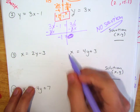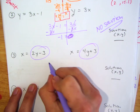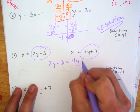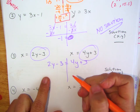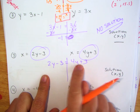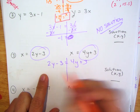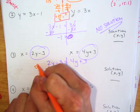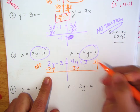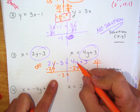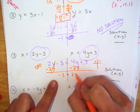Both of these are equal to x, so let's go ahead and set up the expression: 2y minus 3 is equal to 4y plus 3. Now let's get rid of the y's because they're on both sides, so I'm going to do minus 2y on both sides using opposites. That gives me negative 3 equals 4y minus 2y, which is 2y plus 3.